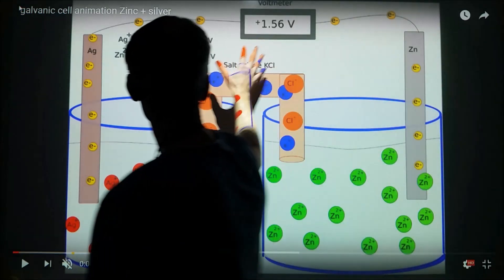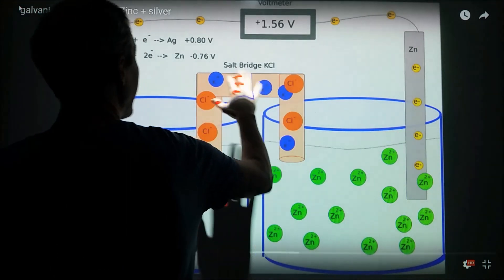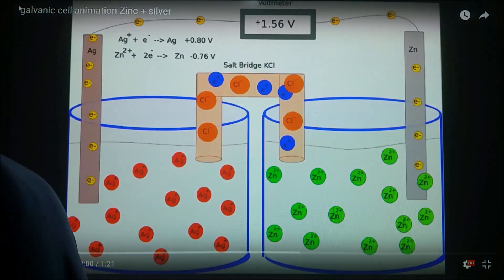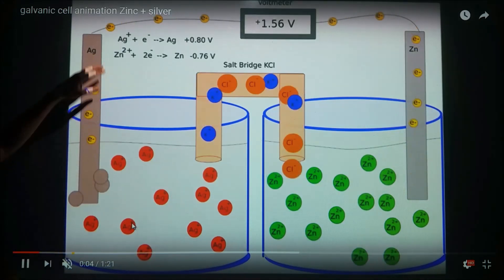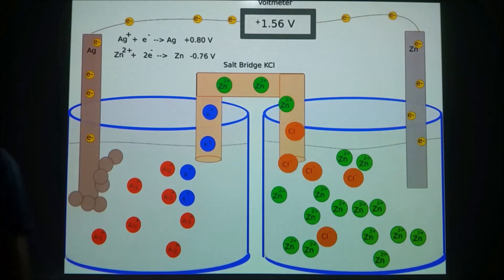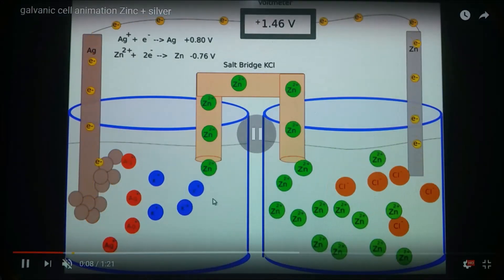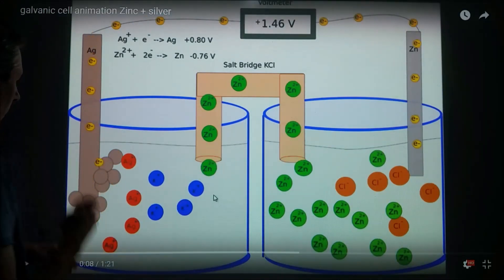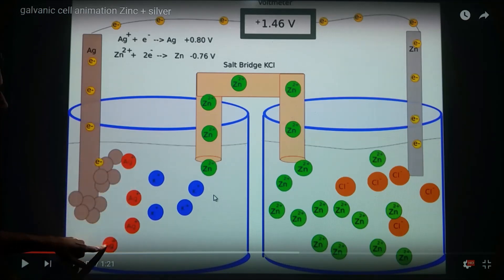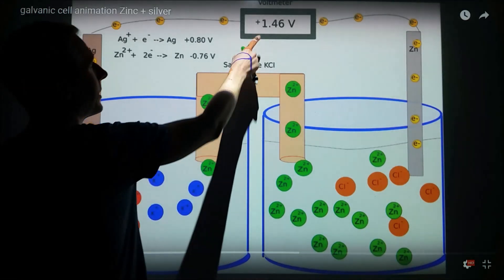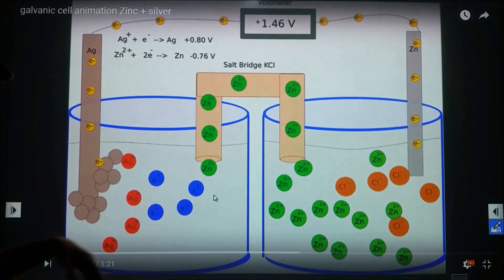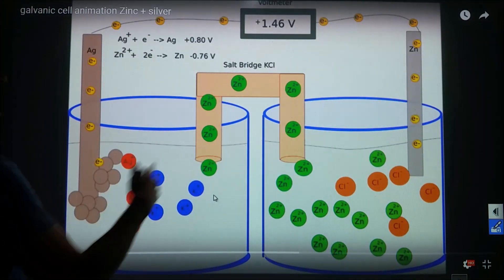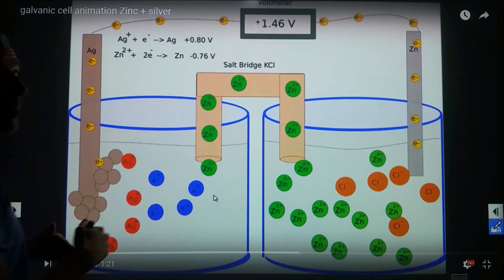At standard concentration and standard temperature, the voltage is plus 1.56 volts. We hit play and we see that the electrons move over here towards the silver. As the amount of silver ions decreases, the voltage starts to change, and as the zinc ions increase in concentration, the voltage starts to drop.